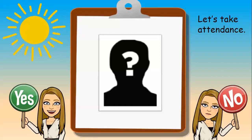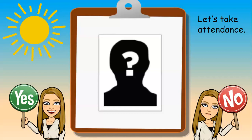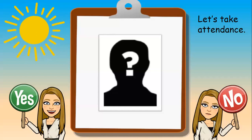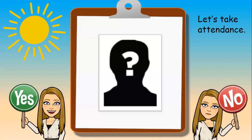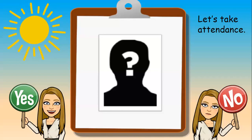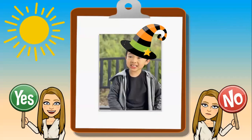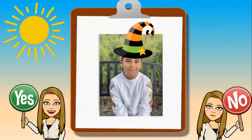After everyone has come in and the bell is rung, we would take attendance. Students can actively look around the classroom for their classmates and say yes or no to them being present that day. We go through all the students marking them here or absent.